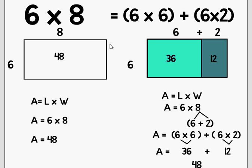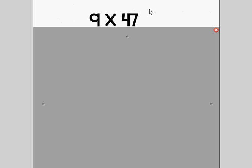You may be thinking, why would I do all that work on a fact I already know? Well, you don't just need this for easy problems — you can use it for hard problems too. So if we look at the problem nine times 47, you might be saying, I can't do this in my head. But yes, you can — just use the distributive property.